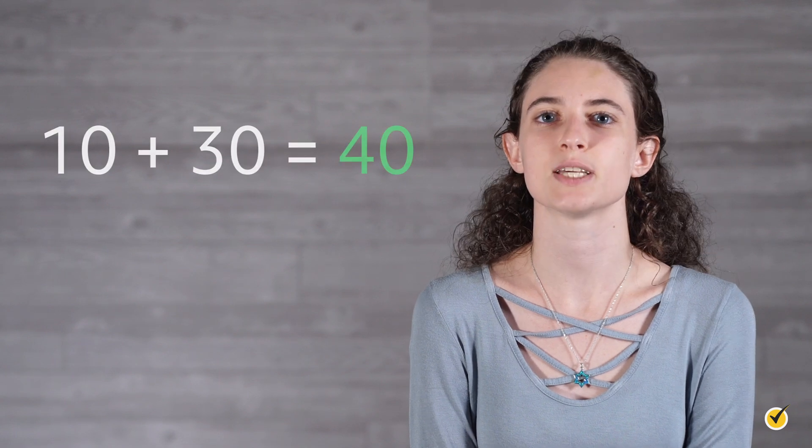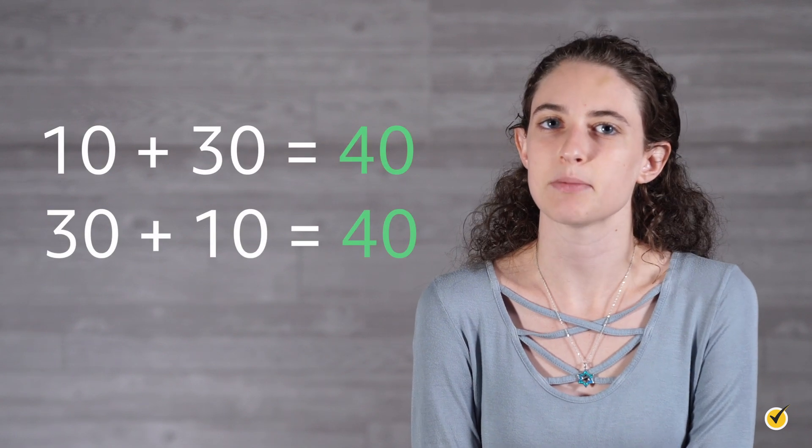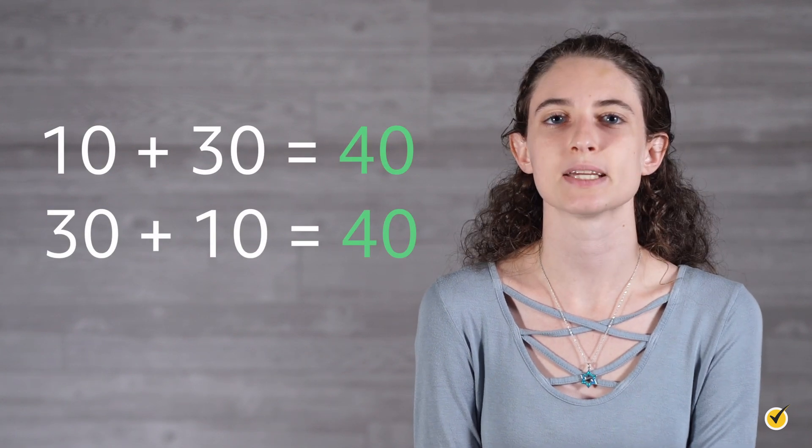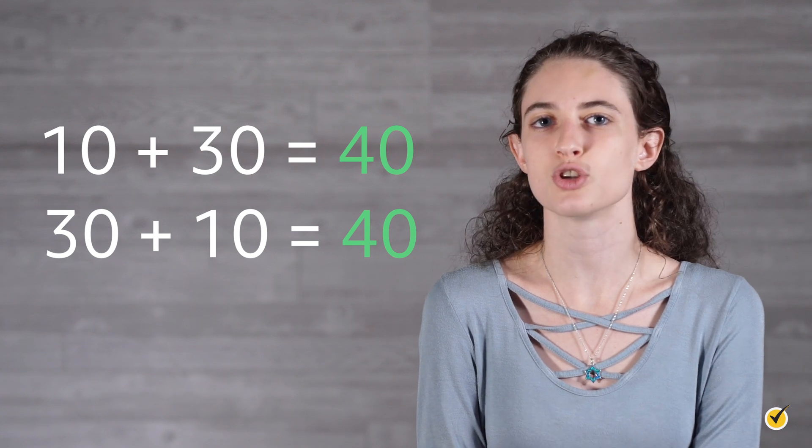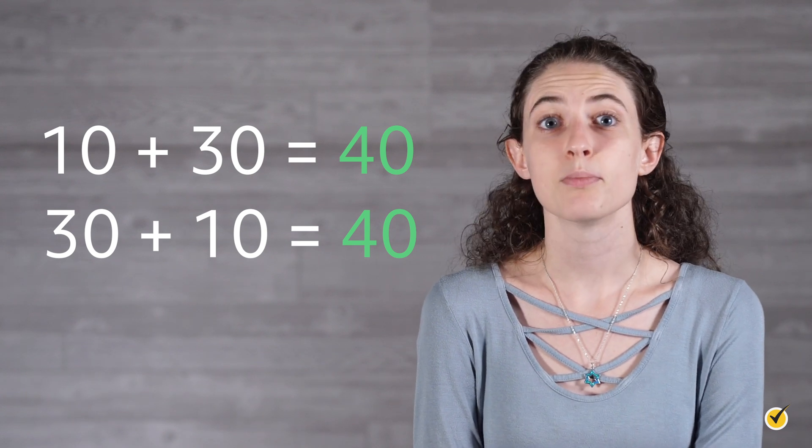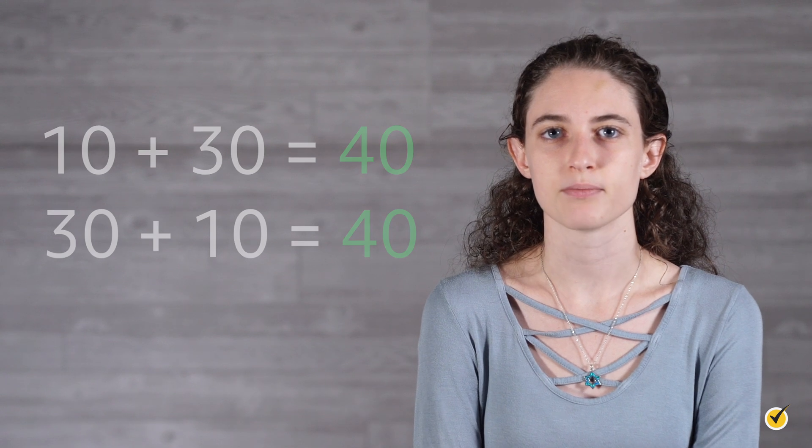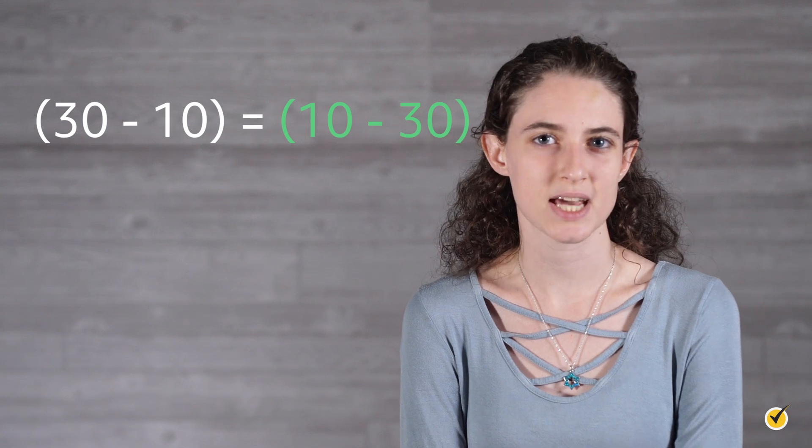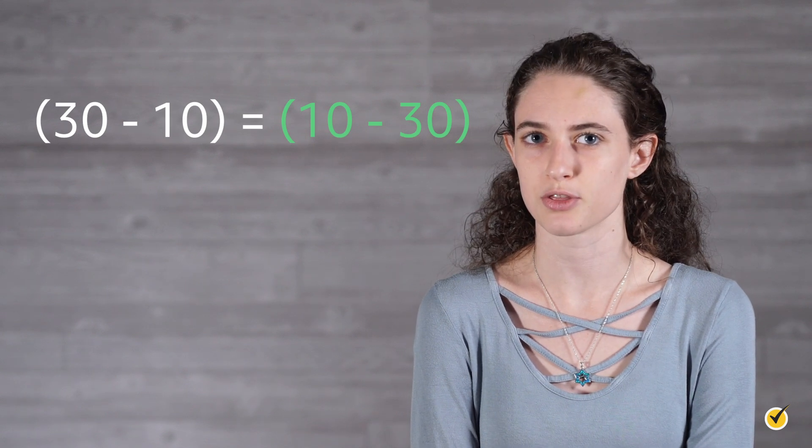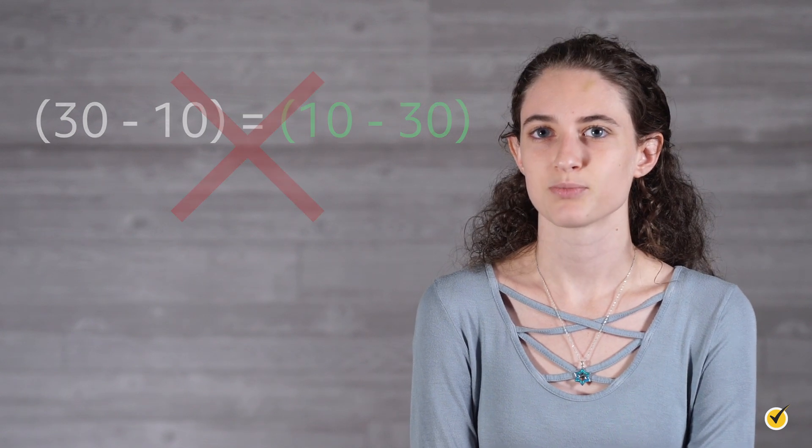It is important to notice that when using addition, the order of the values does not matter. For example, 10 plus 30 is the same as 30 plus 10. The placement or arrangement of the values has no effect on the outcome. Both arrangements would equal 40. However, the same is not true for subtraction. Does 30 take away 10 mean the same thing as 10 take away 30? Clearly not. We can see that the order matters when dealing with a situation involving subtraction.